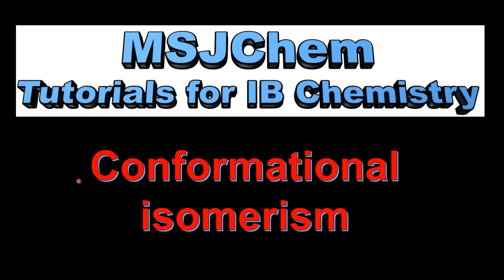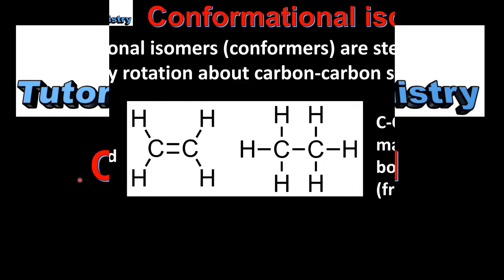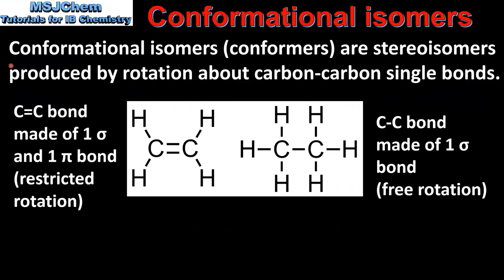This is MSJChem. In this video I'll be looking at conformational isomerism. Conformational isomers or conformers are stereoisomers produced by rotation around carbon-to-carbon single bonds.